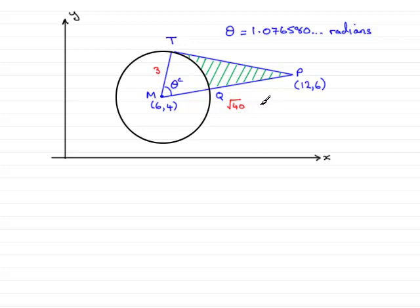So, how are we going to work out this shaded area then? What we're going to do is work out the area of the right angle triangle, MTP, and take away the area of the sector TMQ. And that will give us the green shaded area.